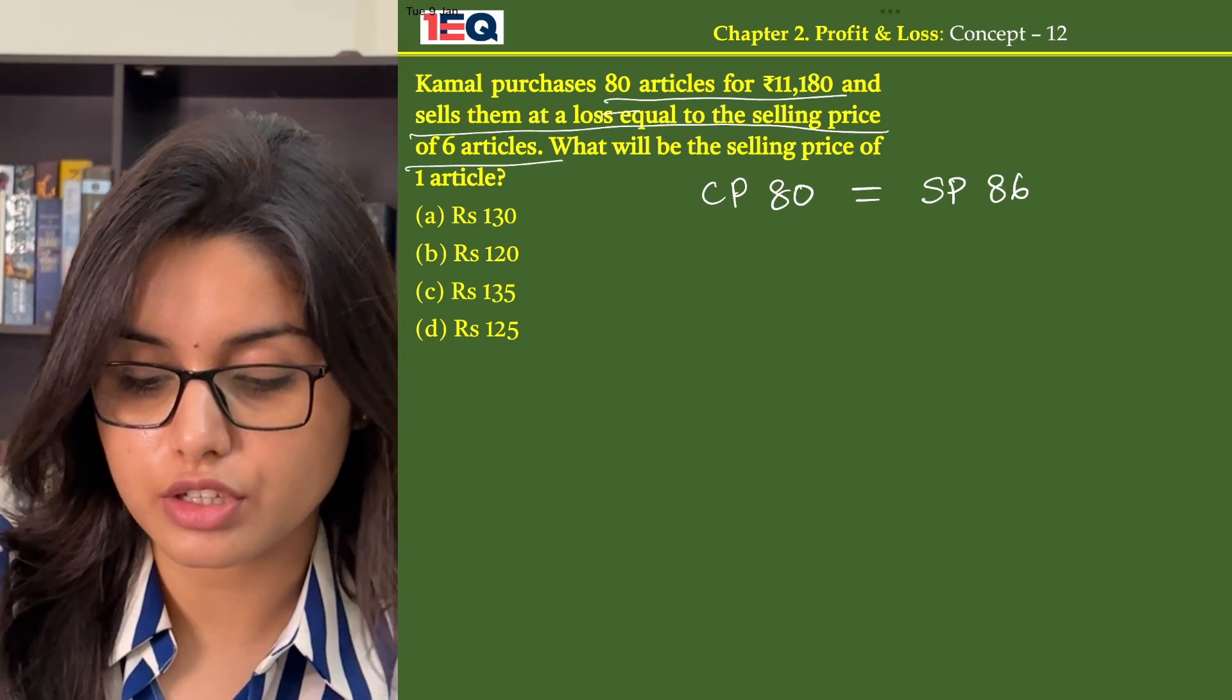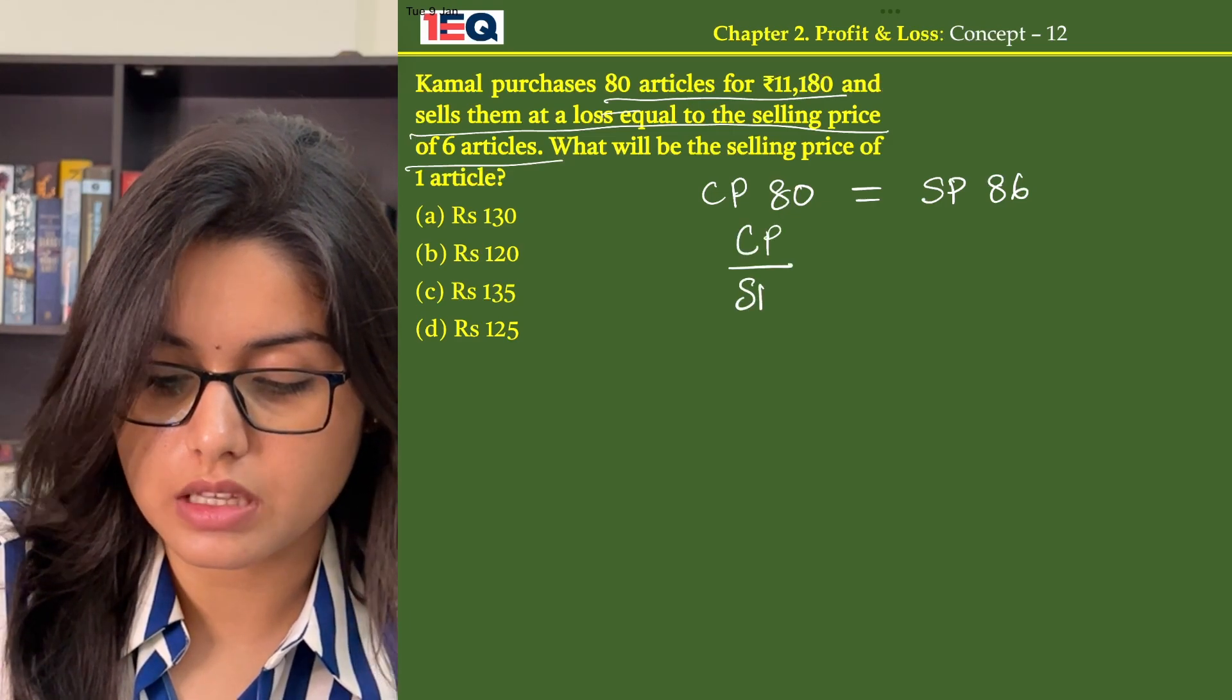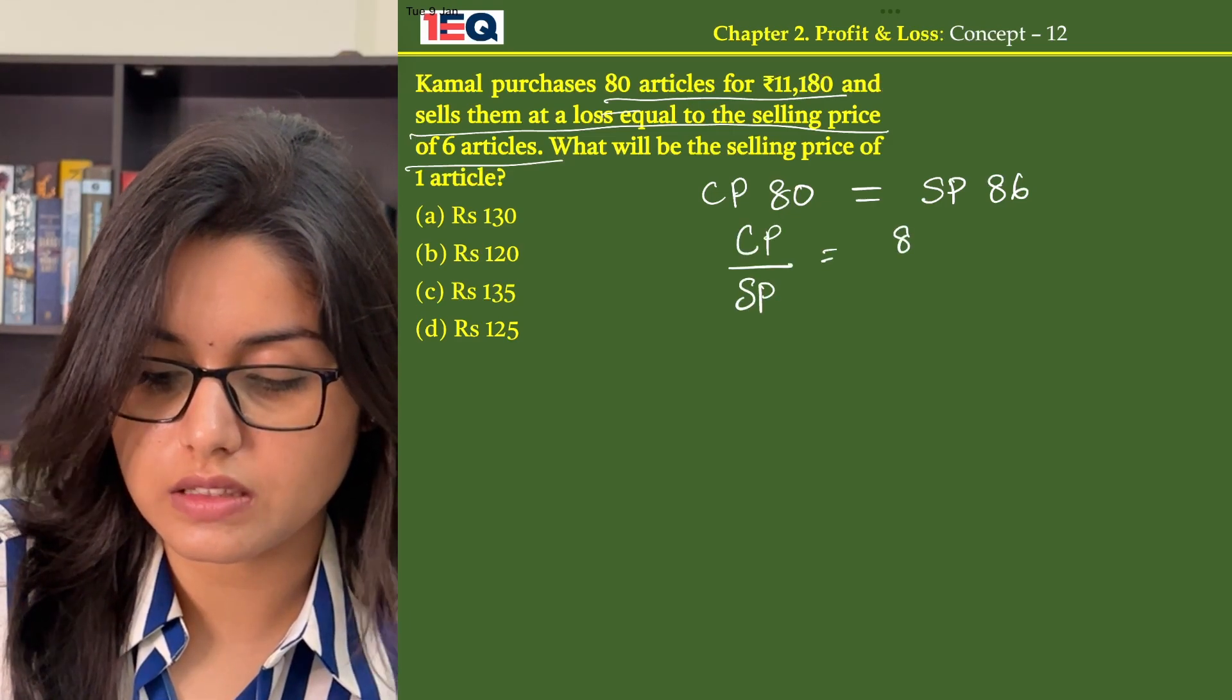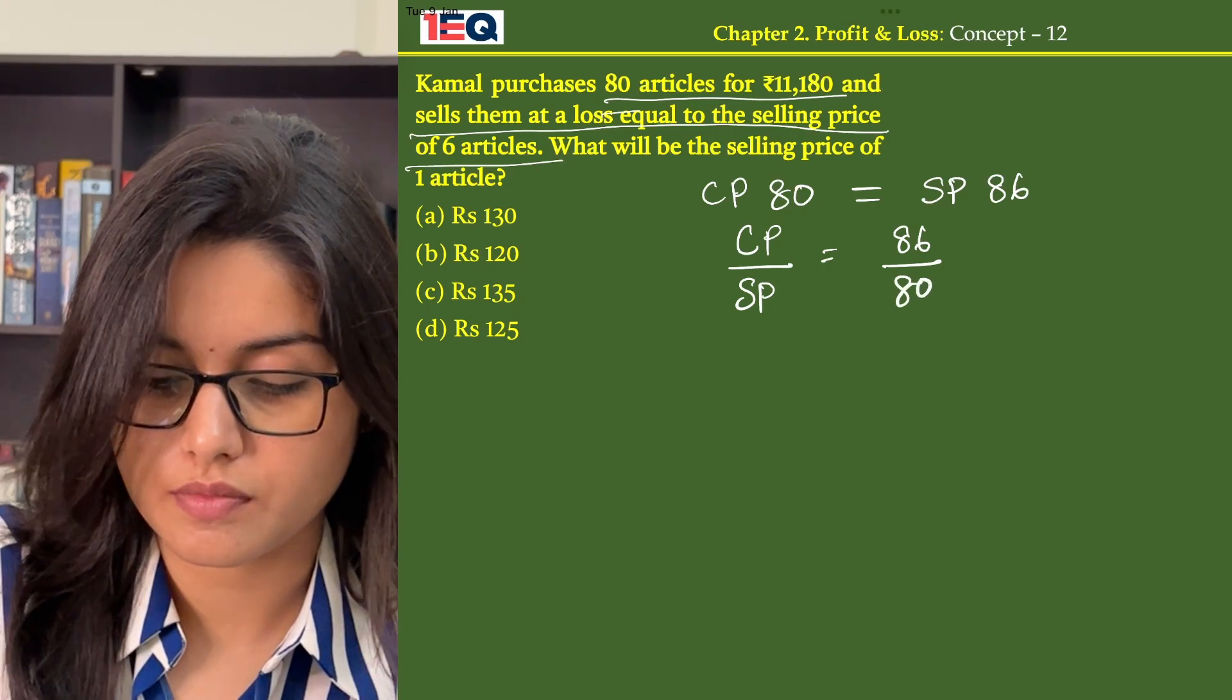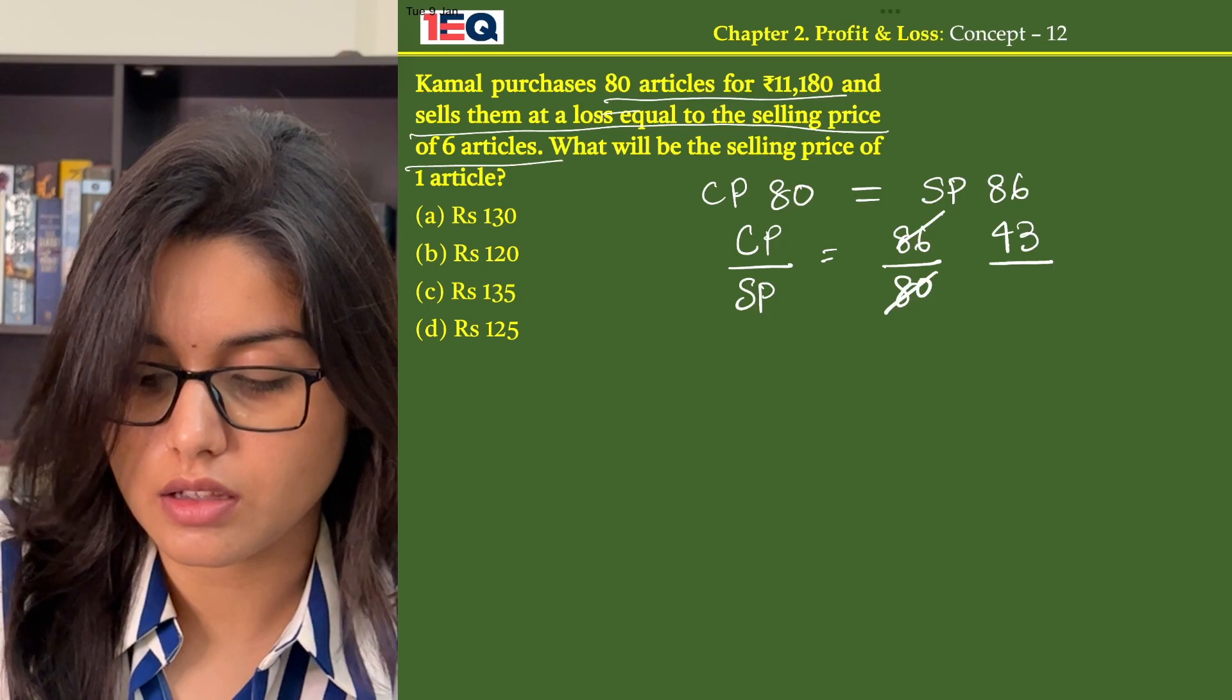Now bringing it into the ratio of cost price to selling price, we get CP by SP is equal to 86 by 80. On dividing by 2, we get 43 by 40.